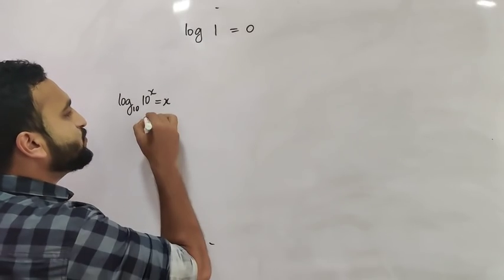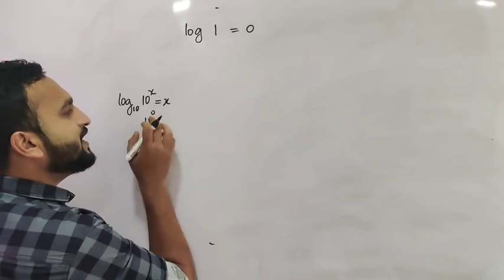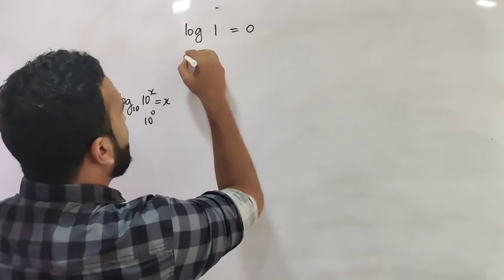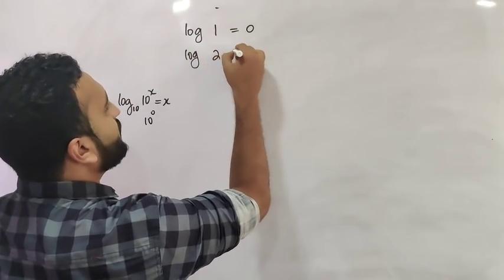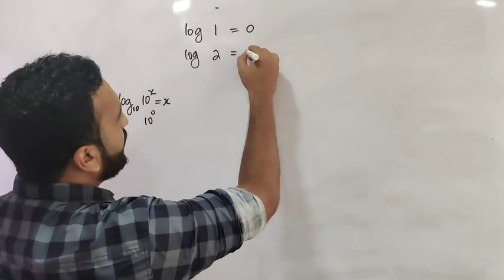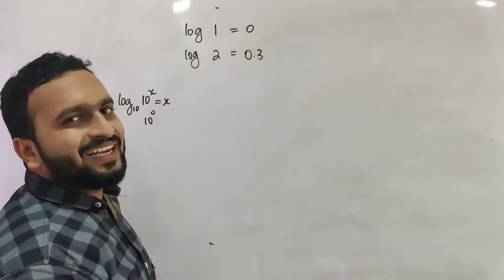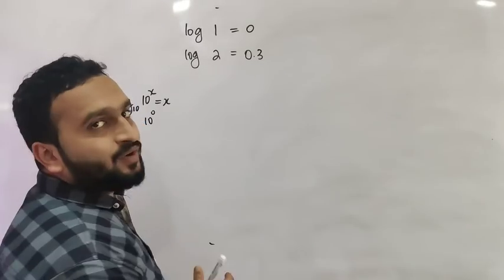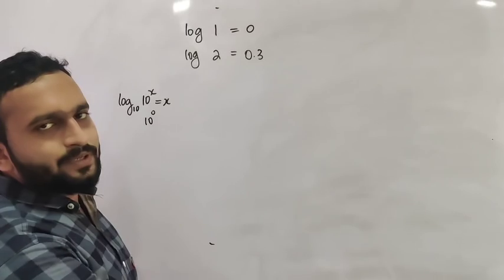Here, 10 raised to 0 is equal to 1, so log of 1 is 0. Now log of 2 is hard to find directly — log of 2 is 0.3010, so we approximate it as 0.3.